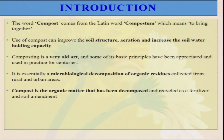Compost is organic matter that has been decomposed and recycled as a fertilizer and soil amendment. Whenever there is a lot of crop residue, it will be bulky in nature — that is not compost. When we keep it somewhere and go through the composting process, it becomes very odorless, friable, and blackish or brownish in color. Only when decomposition is finalized or complete do we call it compost.